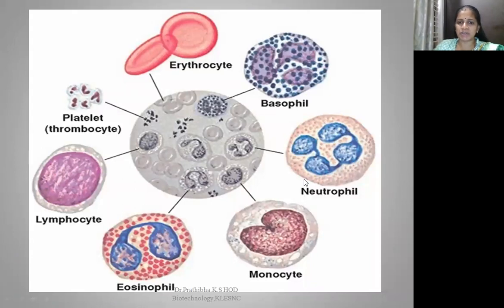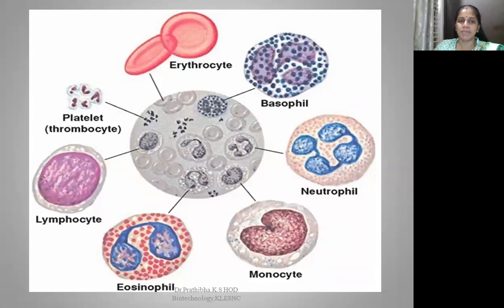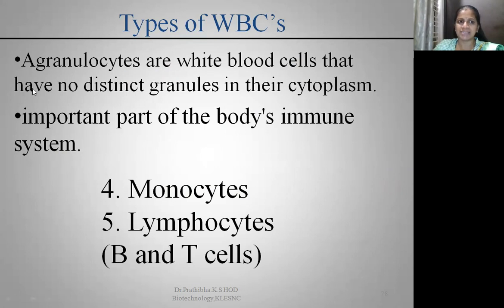In the diagram, you can see basophils with an S-shape, neutrophils with three to five lobes, monocytes with a kidney or bean-shaped nucleus, eosinophils with two lobes, lymphocytes with a large circular nucleus and a thin rim of cytoplasm, and platelets responsible for clotting. Erythrocytes do not play any role in the defensive mechanism — only WBCs play a very important role in defense.